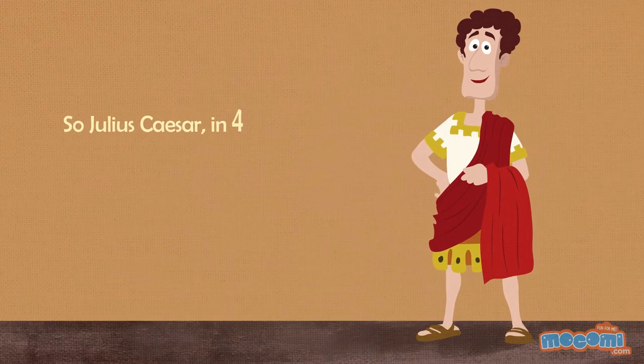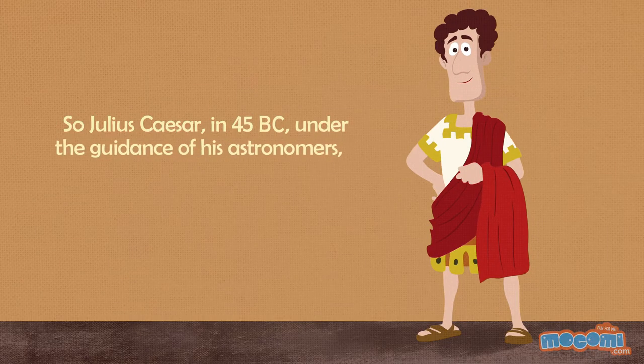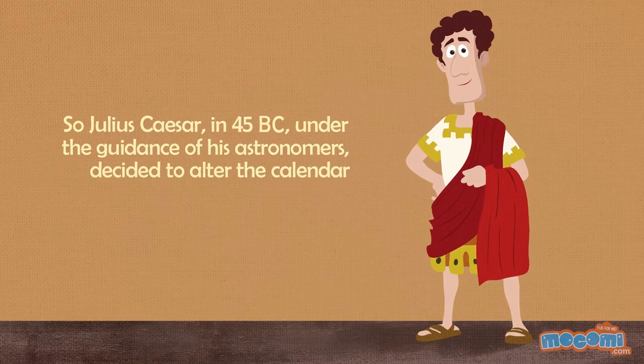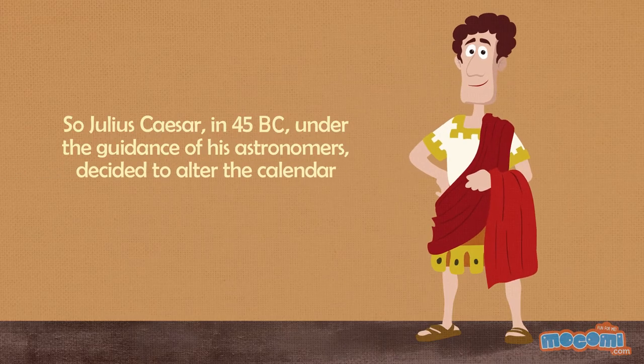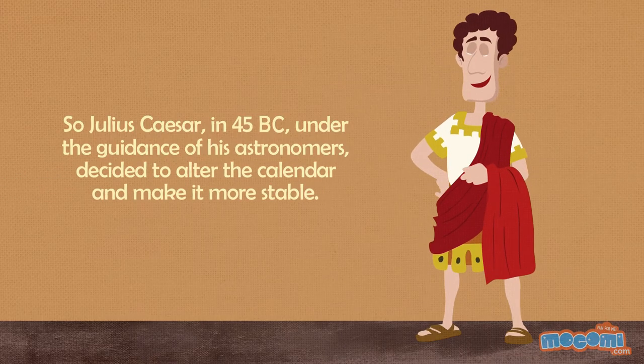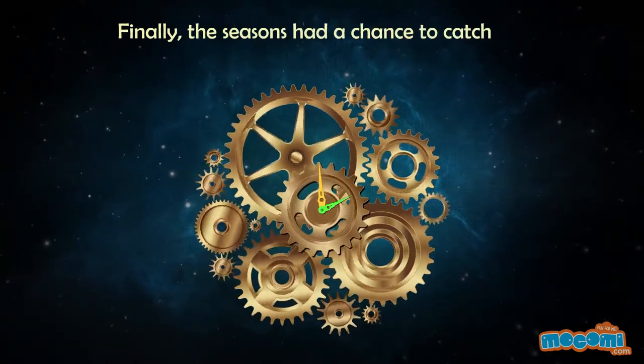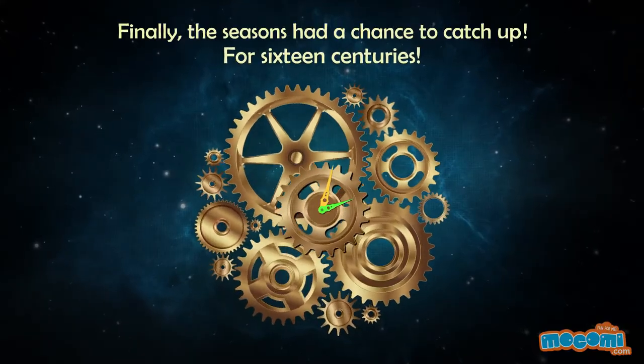So Julius Caesar in 45 BC under the guidance of his astronomers decided to alter the calendar and make it more stable. Finally, the seasons had a chance to catch up for 16 centuries.